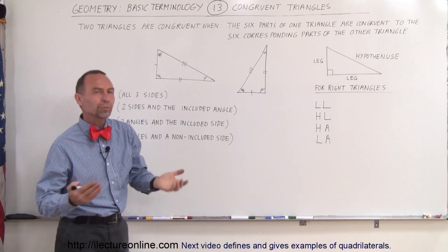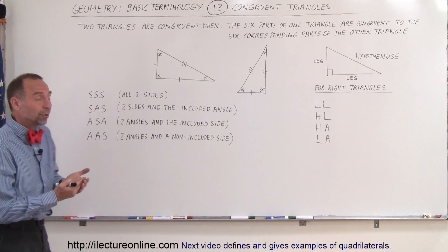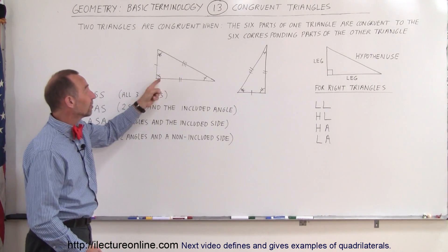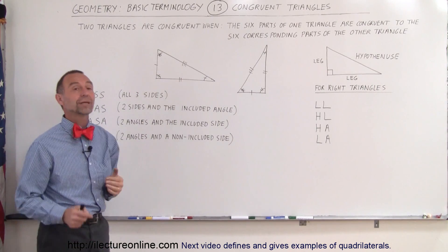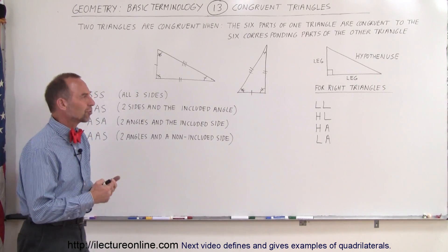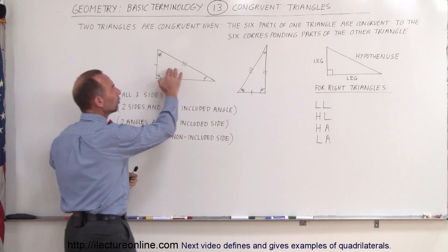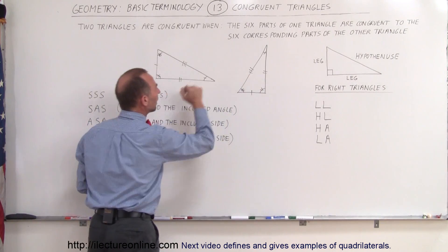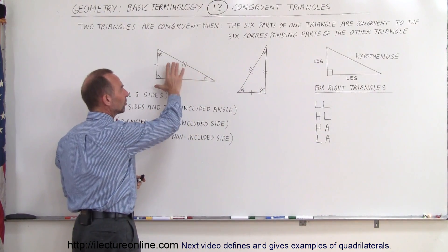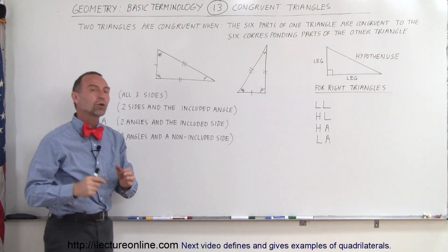So what are the six parts of a triangle? The six parts of a triangle are the three sides and the three angles — that makes up the six parts. Here are two triangles, and they each have six parts: three sides and three angles.